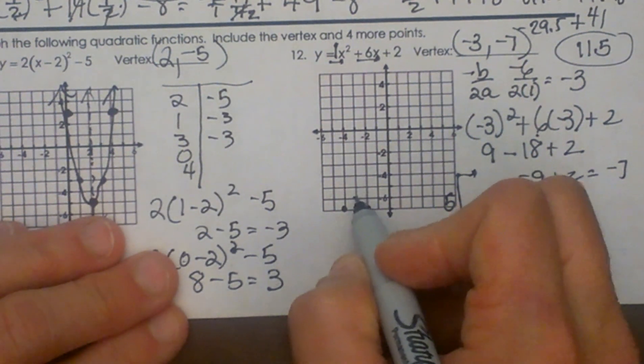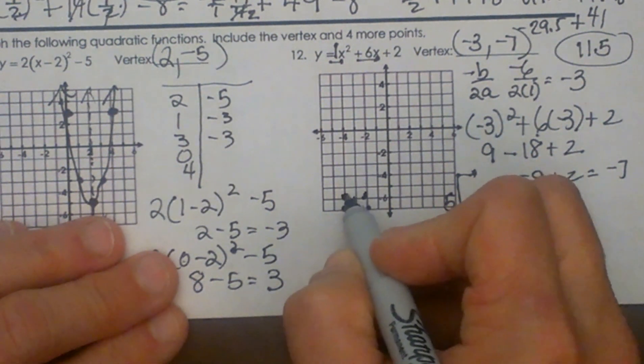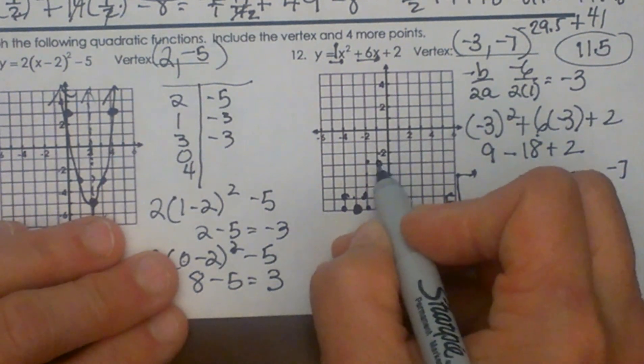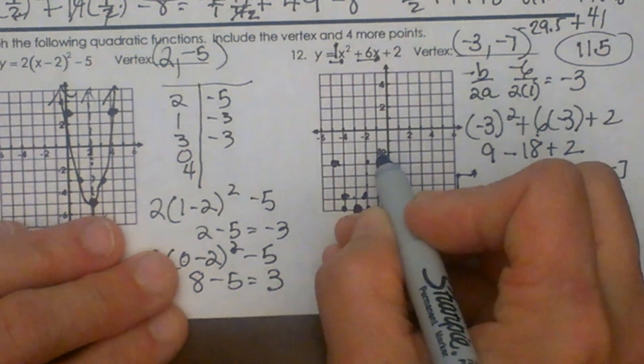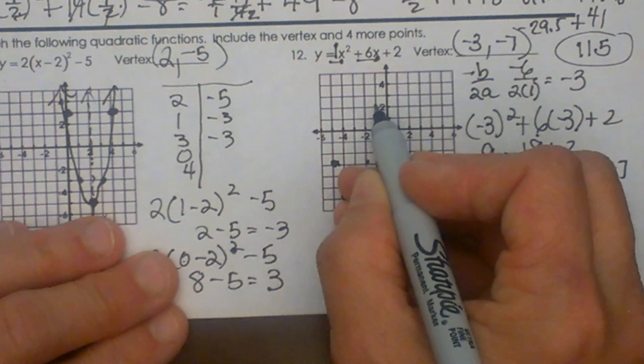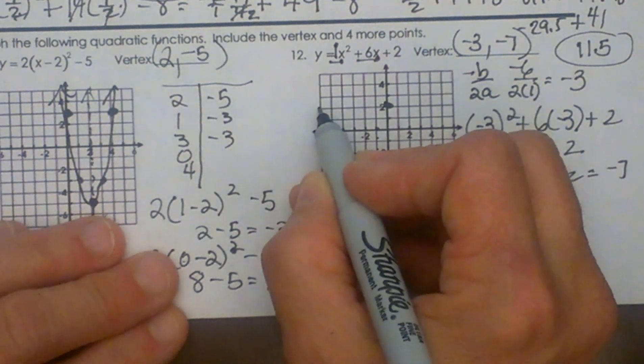So from here I'm going to go up 1 and over 1. And then up 1, 2, 3 and over 1. And then I'm going to go up 1, 2, 3, 4, 5 and over 1. And there we go.